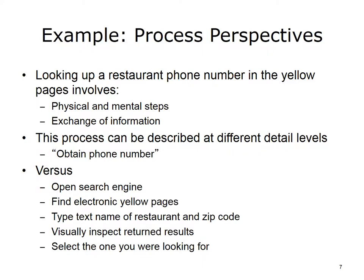Consider the steps that you take to look up a phone number in the yellow pages. You might describe this as looking up the number — i.e., you may describe this as one process or task that is at a high level — or you may describe it at a more detailed level and list each of the individual tasks that make up the larger task of looking up a phone number. Processes also involve both physical and mental steps. Some of the physical steps include clicking to open the web browser, typing the URL for the phone book, and scrolling through the search results. Some of the mental steps are locating the icon to start the web browser, remembering the URL for the search engine, or locating the link to the search engine, or going directly to the yellow pages, and assessing each search result to decide if it is the restaurant that you are looking for.